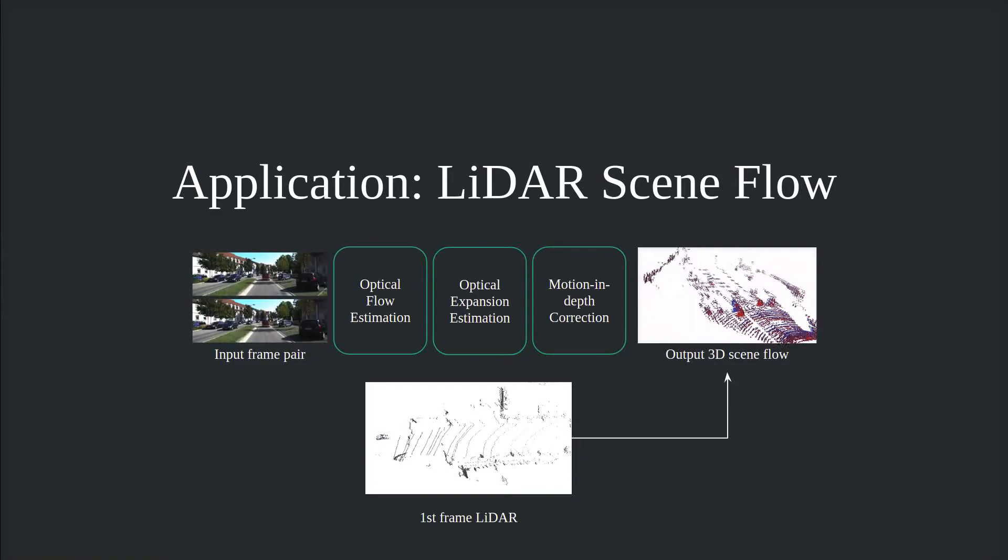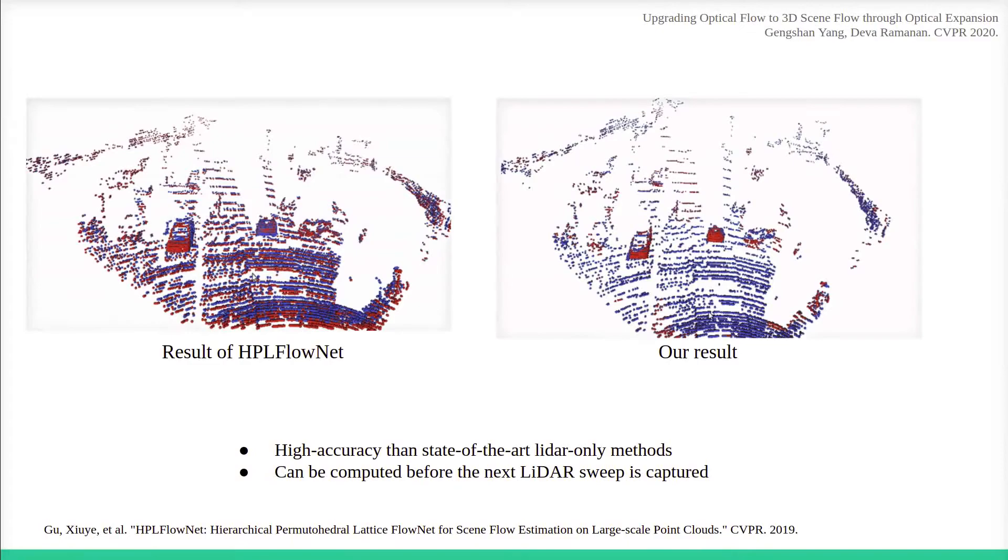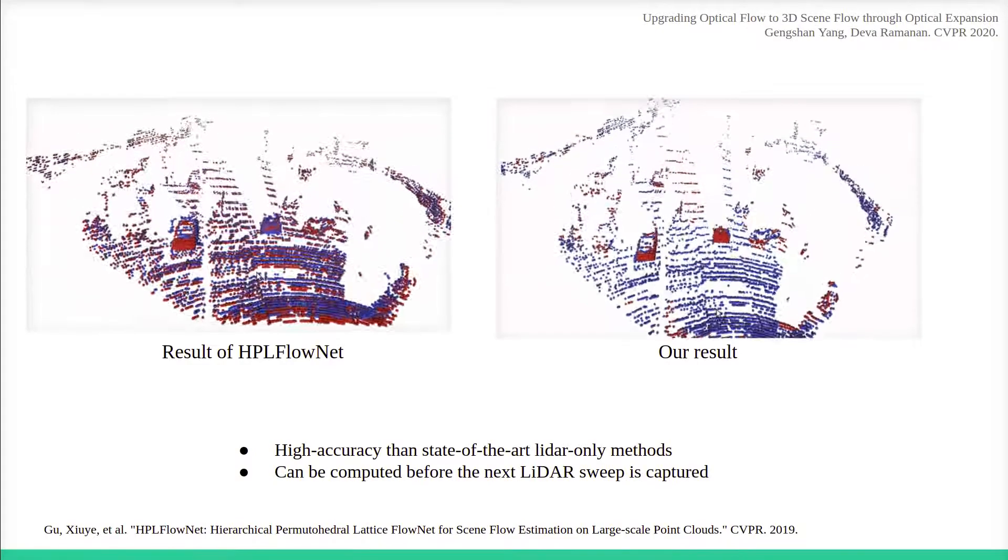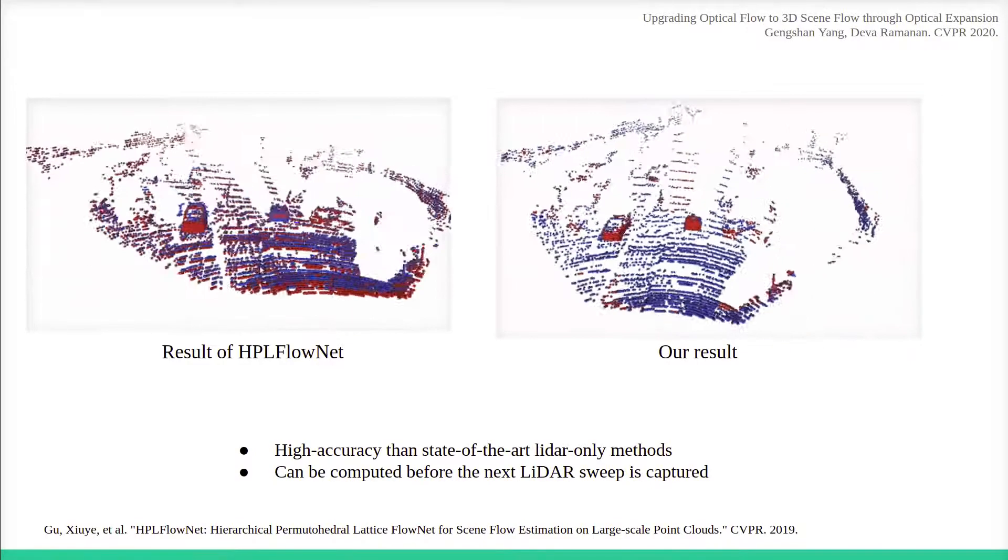We then turn to LiDAR scene flow. We use a monocular image pair to compute up-to-scale scene flow and use the depth of the first LiDAR sweep to upgrade to 3D scene flow. Our method achieves better performance than state-of-the-art methods that directly process two LiDAR sweeps.